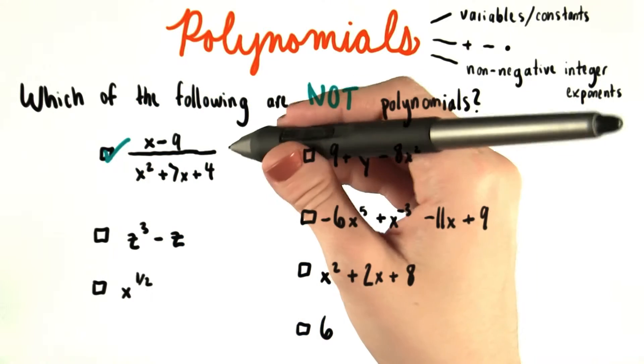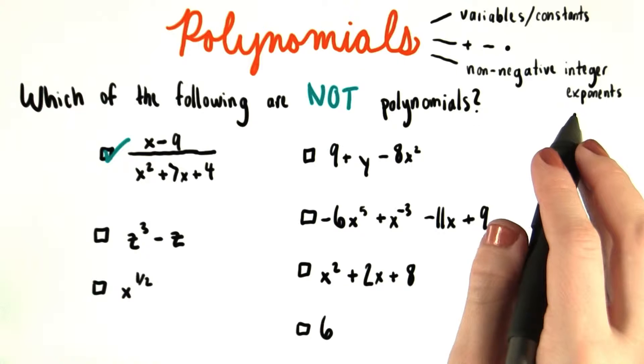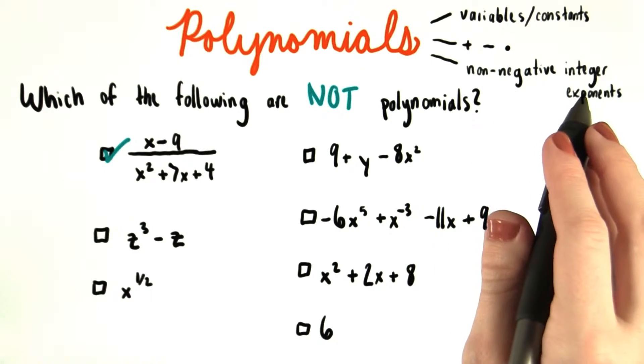So we'll check that one off. We'll talk more about expressions that look like this later on in the course. One of our other important rules is that a polynomial must have exponents in it that are only non-negative integers.